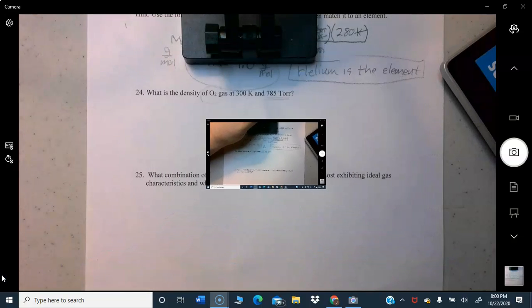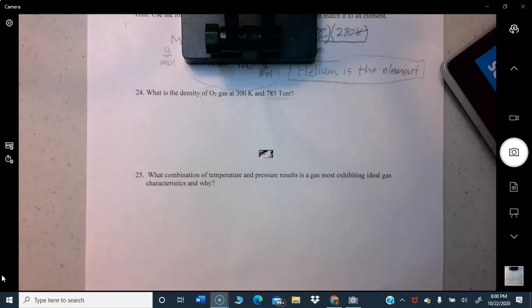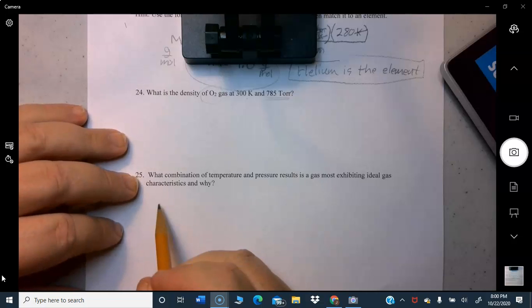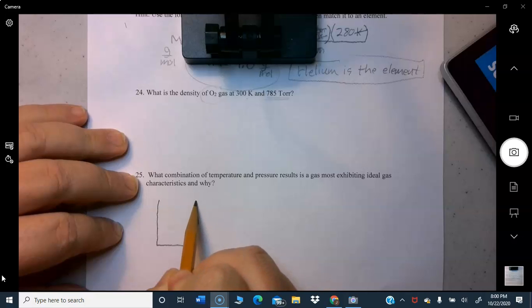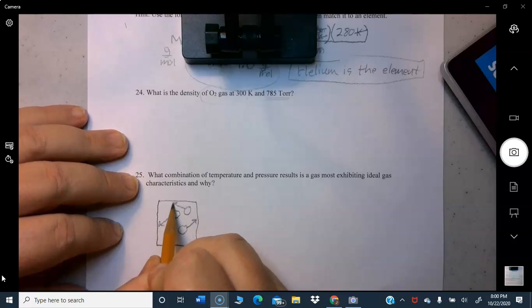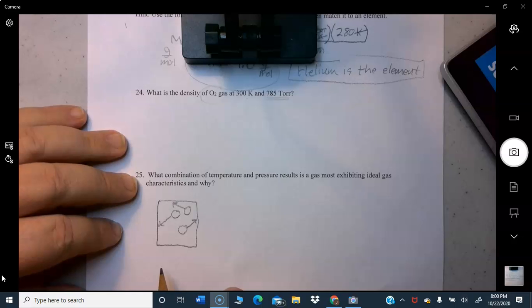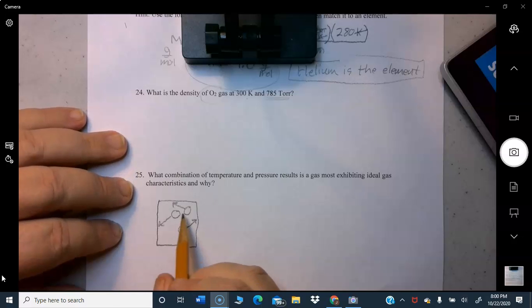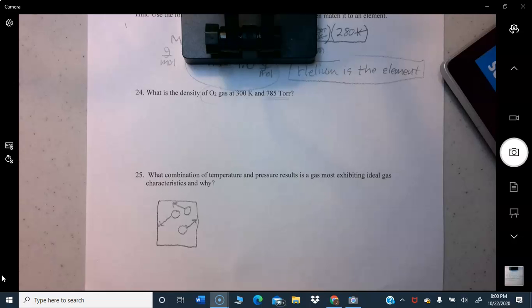What combination of temperature and pressure results in a gas most exhibiting ideal gas characteristics? This was actually on the video. You have a container and you have a certain number of gas molecules, and then you increase that so that they're hitting the sides more often. That's higher pressure. So they're going to start interfering with each other more when you pack them more tightly together.